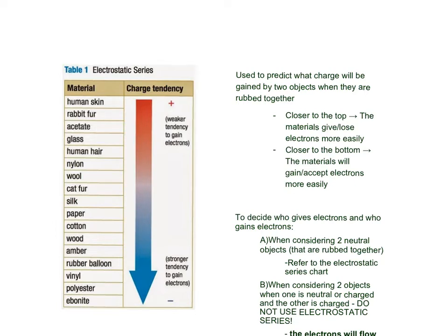Then we need to look at the order that it appears in our list. Over here at the top, our items have a weaker tendency to gain electrons. If we have a weak tendency to gain electrons, that means they're probably not going to hang on to their electrons. Over here, we have a strong tendency to gain electrons.